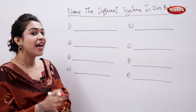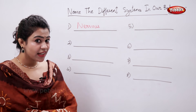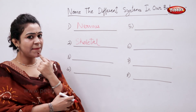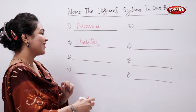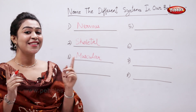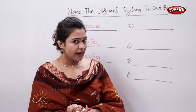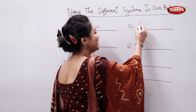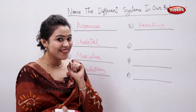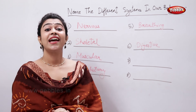so the first system is nervous system, and then skeletal system, and then muscular system, and then circulatory system, and then comes breathing system, and then digestive system, and excretory system.